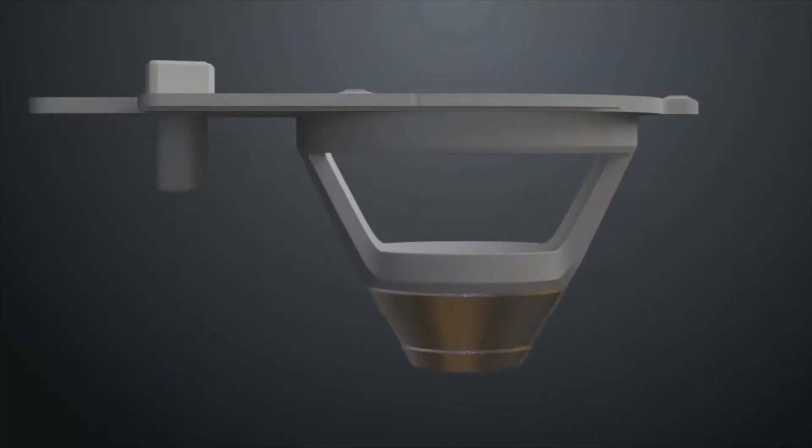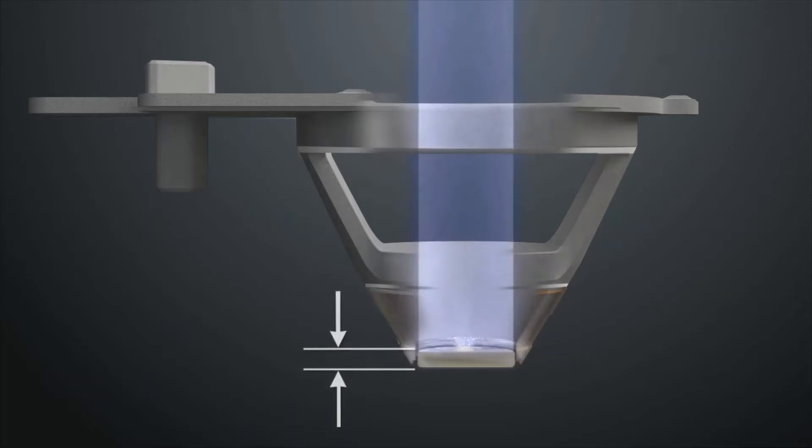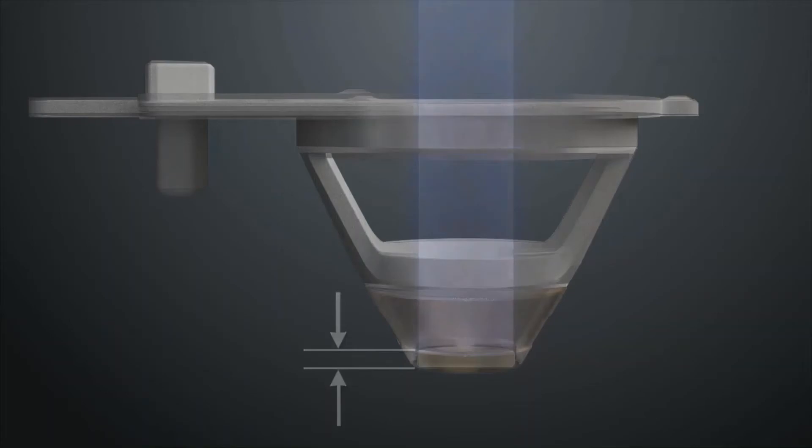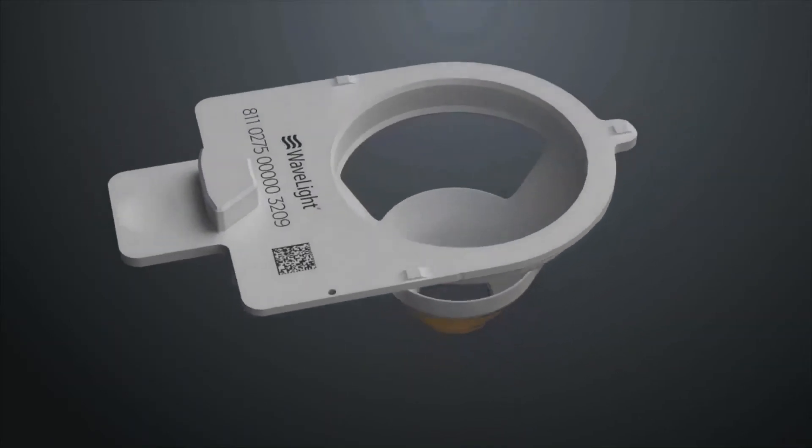The Wavelight FS200 uses a ballast control check to automatically calibrate each applanation cone. Adjusting for the thickness of the glass and temperature shifts within the laser system's components, the calibration process provides consistent and predictable flap thickness.